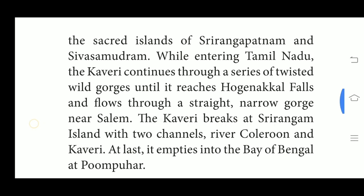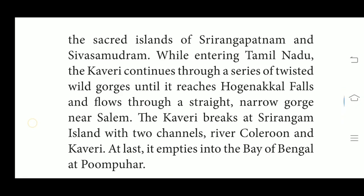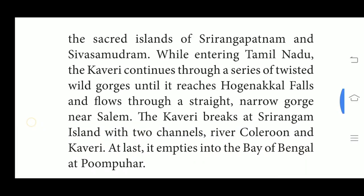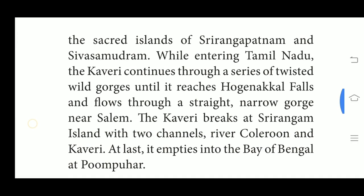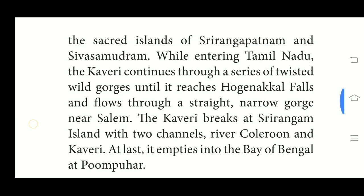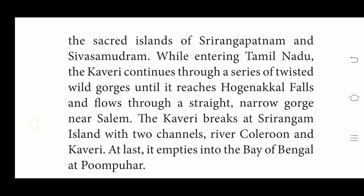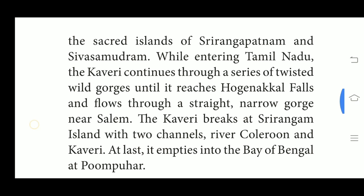The Kaveri widens as three tributaries — Bhavani, Noyyal and Amaravathi — join it in the region called Akhanda Kaveri. In Tiruchirapalli district, the river branches into two parts: the northern part is called Kollidam and the southern branch is called Kaveri. From here, the Kaveri delta begins. After flowing 16 km, the two branches join again to form the Srirangam island.